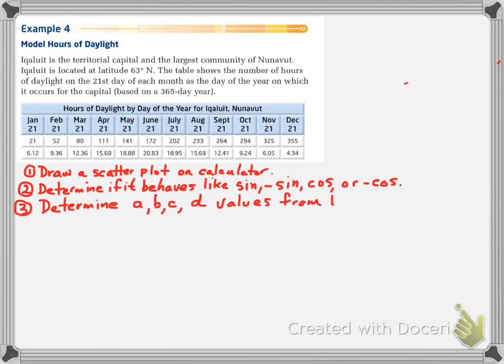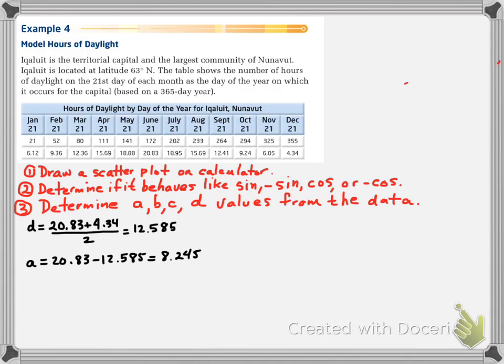Therefore, we need to find a, b, c, and d values for our data, so we can plug it into our equation. d is the midpoint. That's the median. So, if I take the max plus the minimum, divide it by 2, I'll get the middle. That's 12.585. Now, if I take the max minus the middle, I'm going to find our amplitude. That's 8.245. 20.83 was our max. 12.585 was our median, our middle.